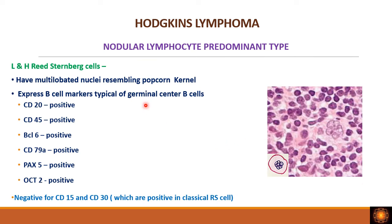The immunophenotype of the popcorn cell (lymphocyte-histiocyte RS cell variant) differs from classic RS cells. These cells express CD20, CD45, BCL6, CD79a, PAX5, and OCT2. They are negative for CD15 and CD30. This is in contrast to all classic Hodgkin's lymphoma RS cells, which are CD15 and CD30 positive. In nodular lymphocyte predominant type, RS cells are typically negative for CD15 and CD30.